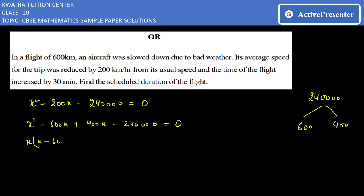What you can do next is take common: x from the first two terms and 400 common from the last two terms. You get x minus 600 and x minus 600 equals 0.